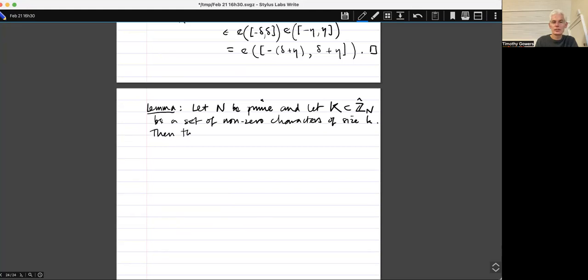Then the Bohr set B K delta contains an arithmetic progression mod N, that is, of length at least, when I say length I mean size, perhaps I'll say size. The cardinality of the arithmetic progression of size at least one plus two delta N to the one over k, one over little k, floor. I think that's the bound we're gonna get.